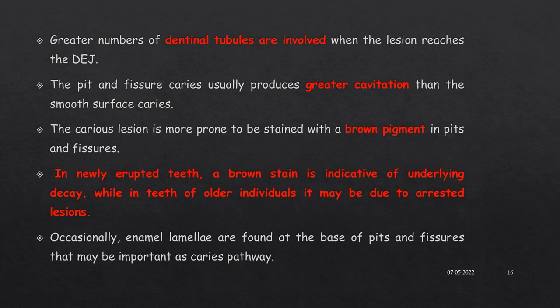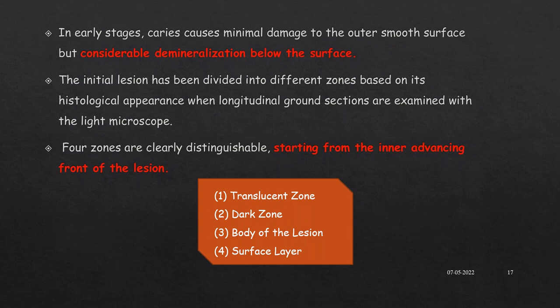The caries lesion is more prone to staining with brown pigmentation. In newly erupted teeth, the brown stain is indicative of underlying decay, while in older individuals it may be due to arrested caries. In early stages, caries causes minimal damage to the outer smooth surface but considerable demineralization below the surface. The initial lesion has been divided into four zones based on histological appearance when longitudinal ground sections are examined under the light microscope: the translucent zone, the dark zone, the body of lesion, and the surface layer.